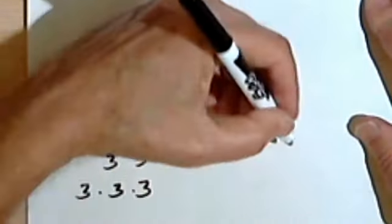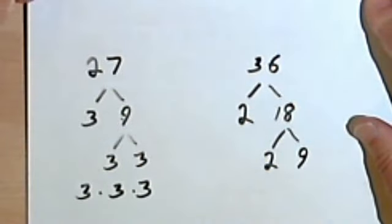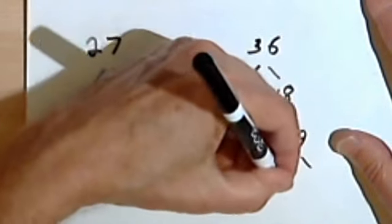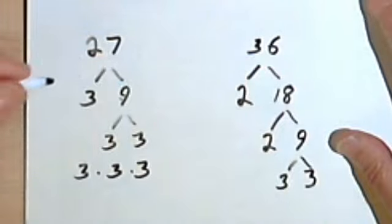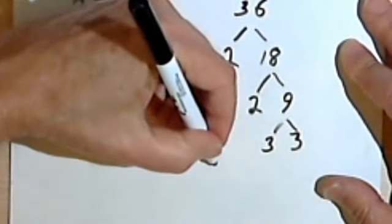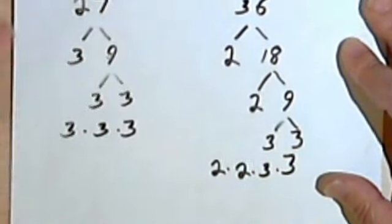18 is even, so I divide that by 2. And I get a 2 and a 9. And then 9, as I saw before over here, can be broken down into 3 and 3. So writing all my factors of 36, I would have 2 times 2 times 3 times 3.